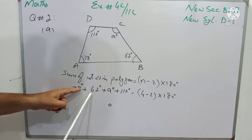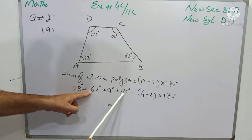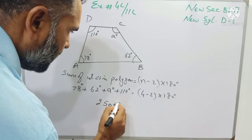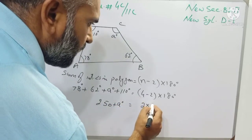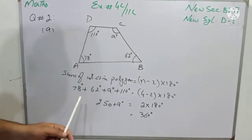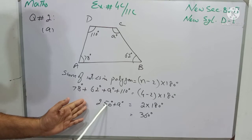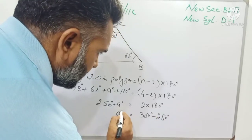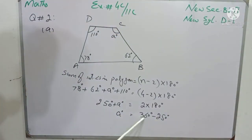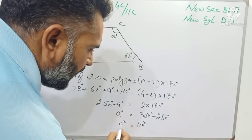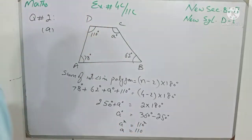180 multiplied by 2 equals 360 degrees. The 250 degrees is on the left side; when transferred to the other side it becomes minus 250. So a equals 360 minus 250 degrees, which is 110 degrees. The degrees cancel with degrees, and the value of unknown a is 110.